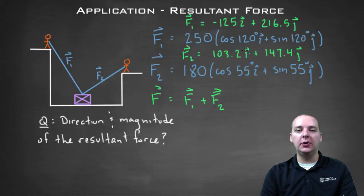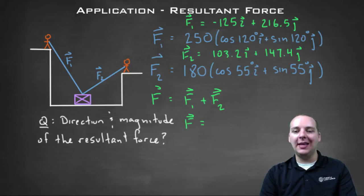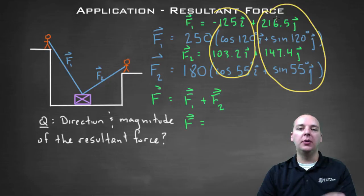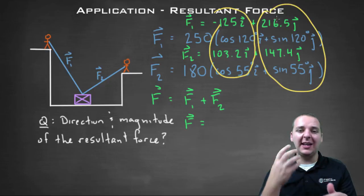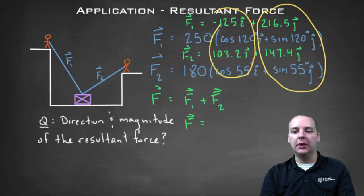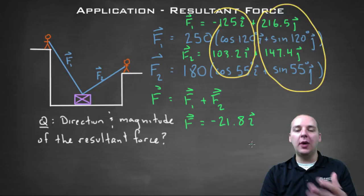So you should verify that you get those same answers there. So to get our force, our capital F, we're going to add the I components together and add the J components together to get our resultant force. So we'll take negative 125 I plus 103.2 I, add these two I components, and I think that's negative 21.8, so that'll be your new I component.